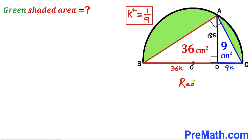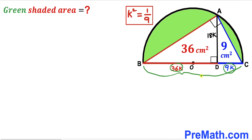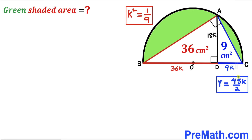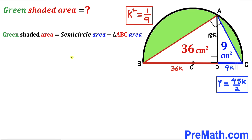Next, let's calculate the radius of the semicircle. The diameter is BD + DC = 36K + 9K = 45K, so the radius r = 45K/2.